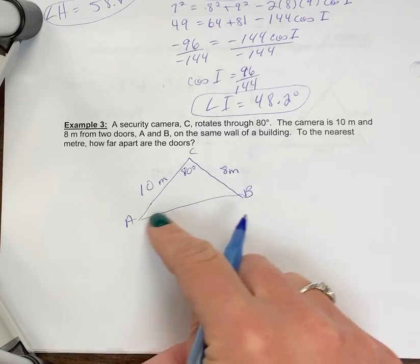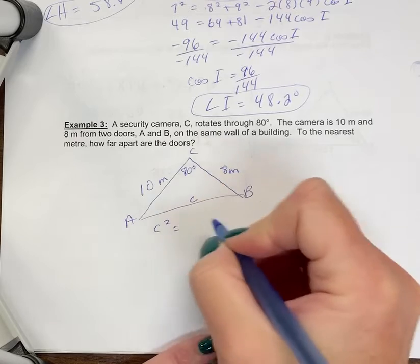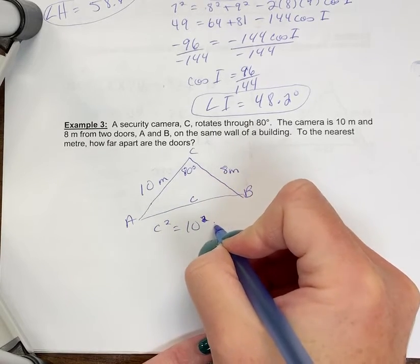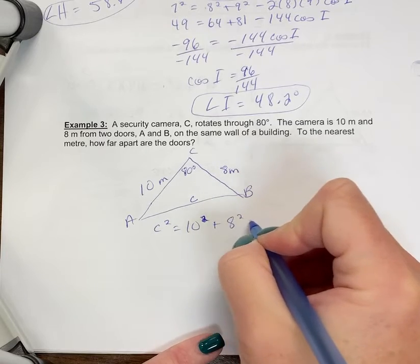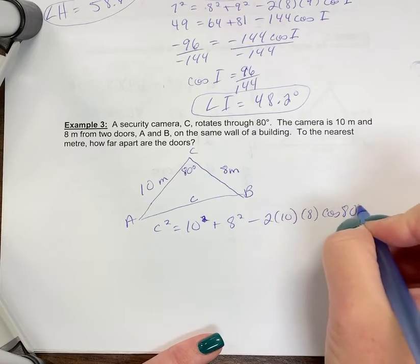What you're solving for is the distance between the two doors, so side C. So that will be your variable here. So C squared equals 10 squared, plus 8 squared minus 2 times 10 times 8 cosine of 80 degrees.